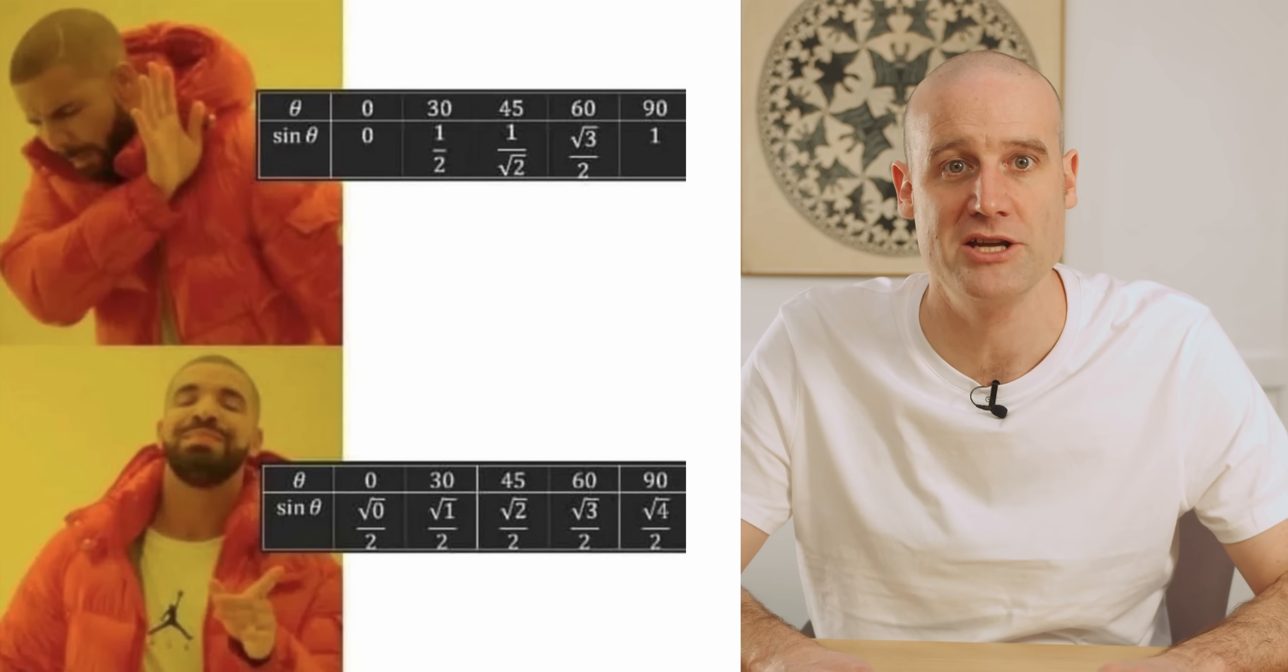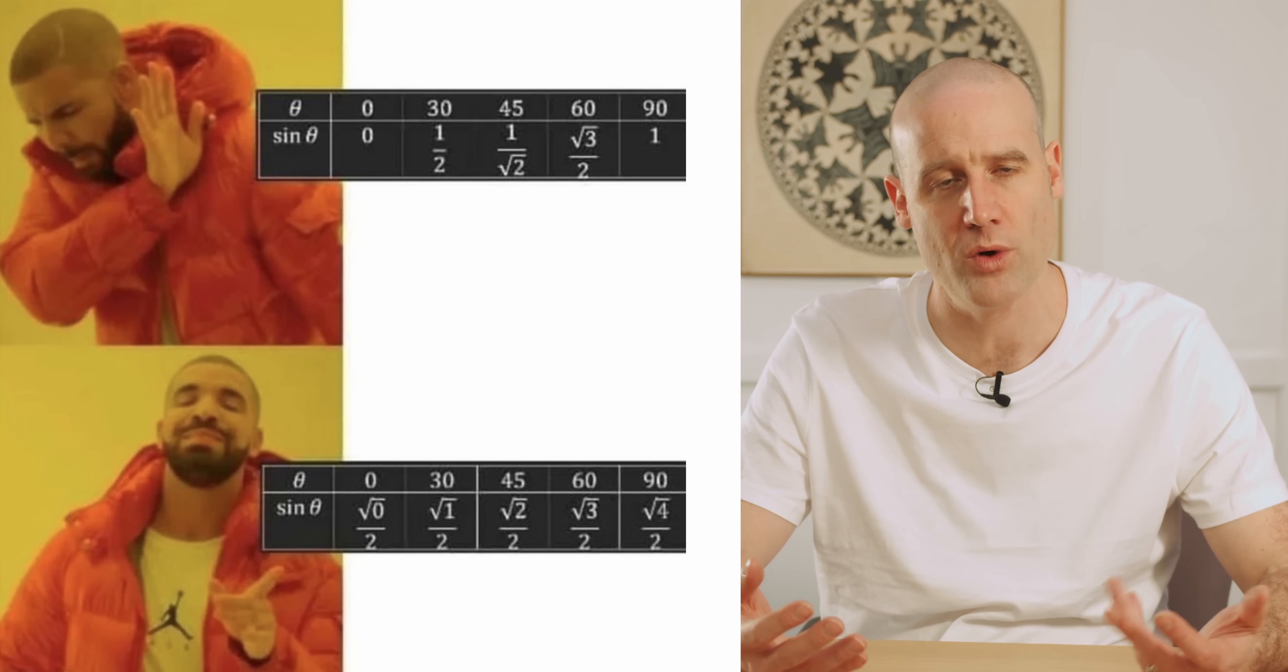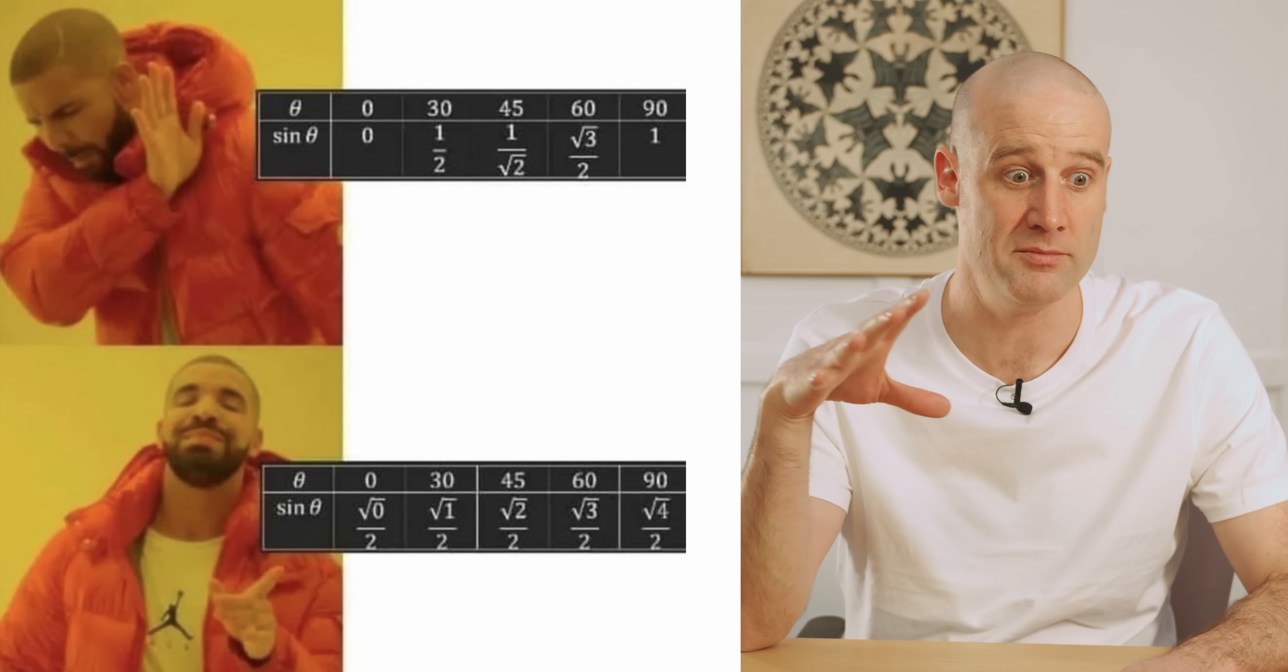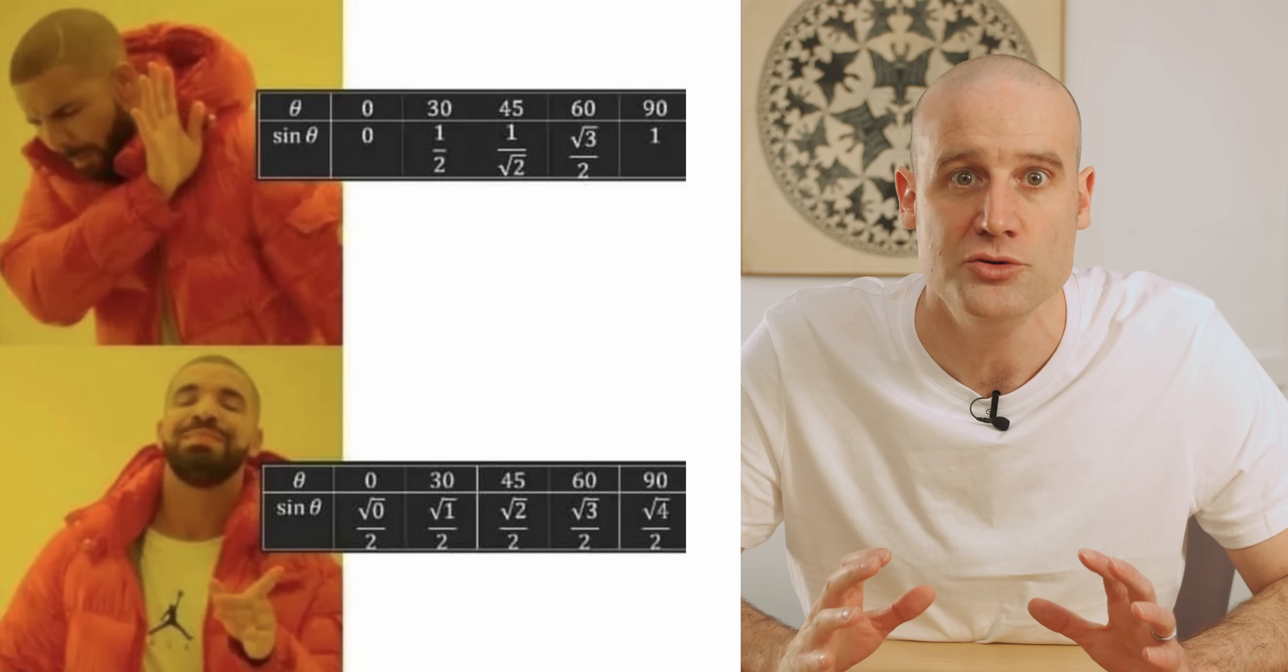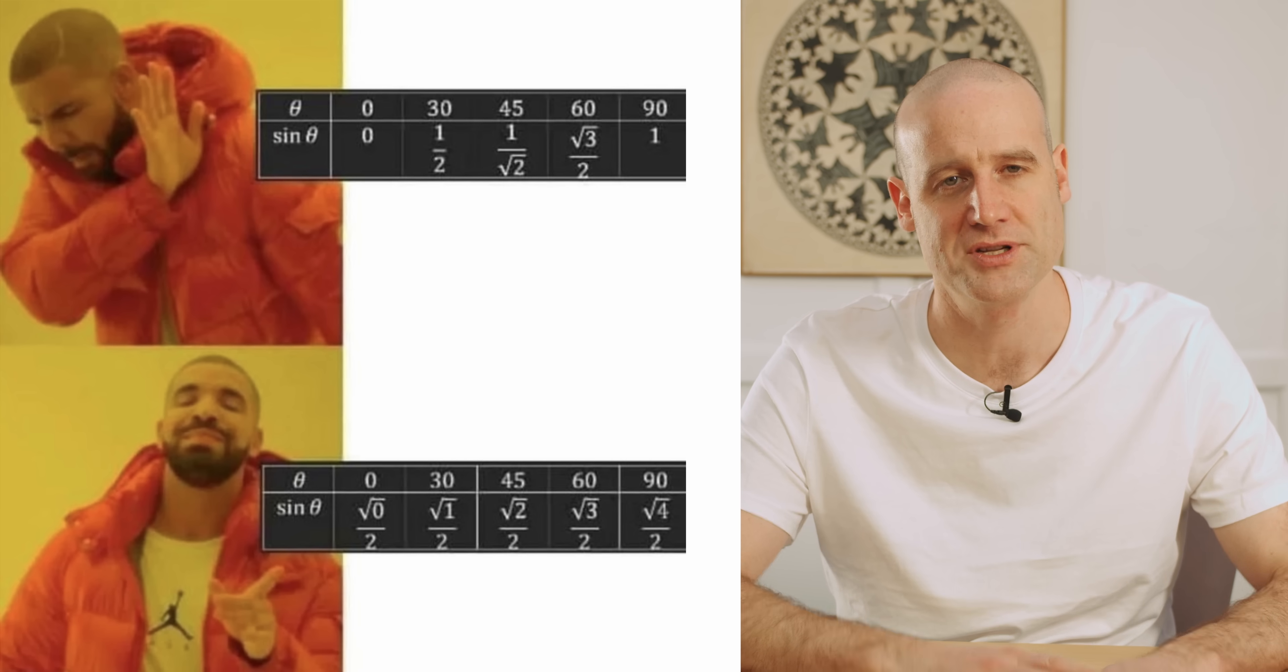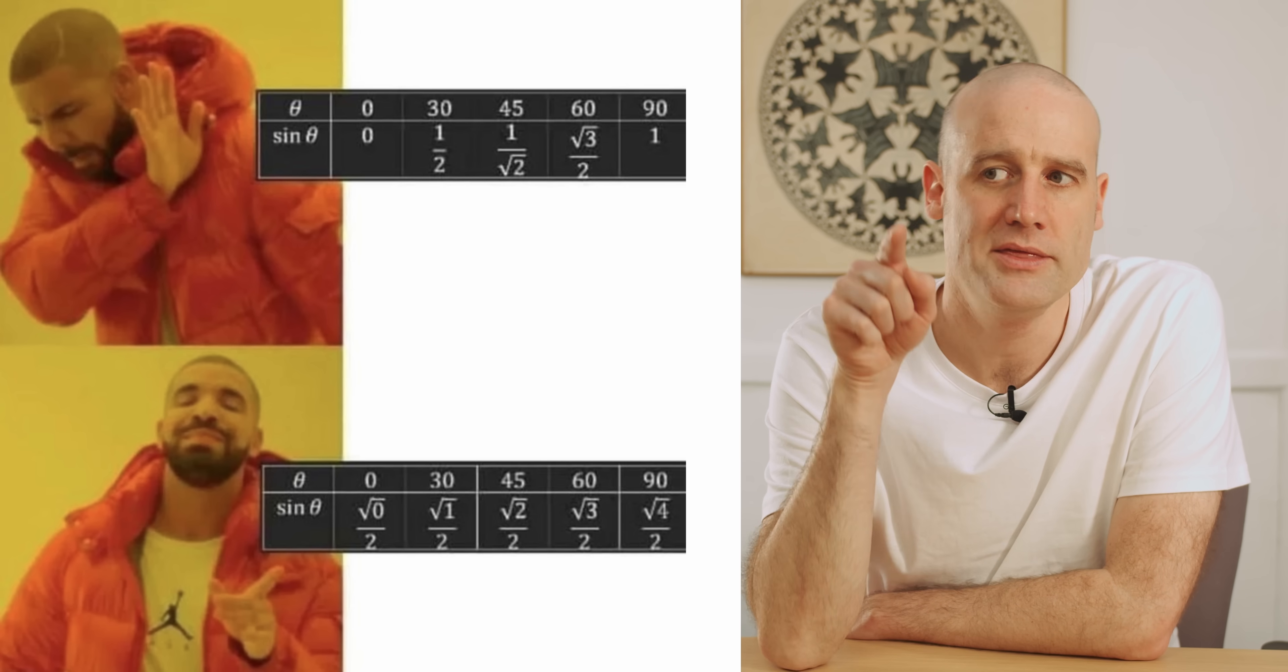This is the meme. It's a variation on the Drake format meme, where the thing at the top is what you don't want, you're shunning that, the thing at the bottom is the better version you do want. In this case we're looking at values of the sine function for different angles. I will say, I'm aware that memes, particularly one like this that's been around for a couple of years now, can evolve into a more ironic sense.